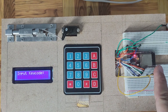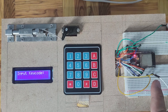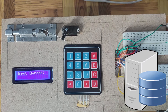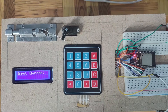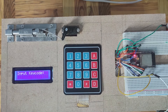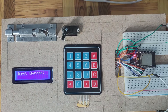Our ESP32 microcontroller captures these keycodes and communicates with our REST API server to check if it is present in our database. Our database is a cloud-hosted MongoDB Atlas database as a service. Our REST API server is built using Node.js and Express.